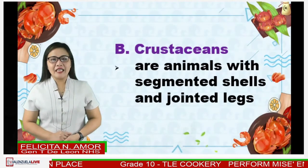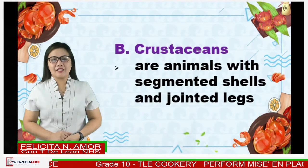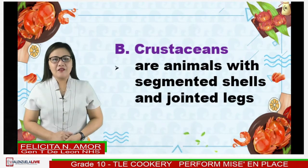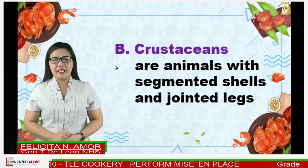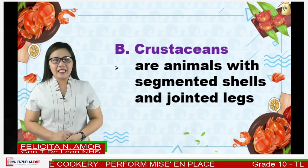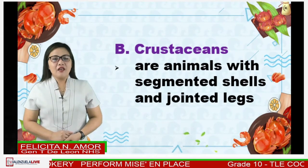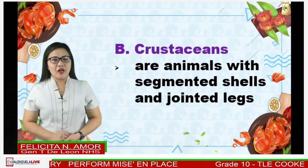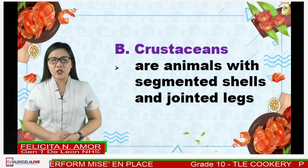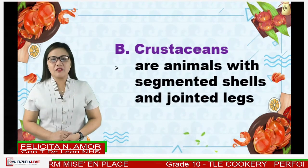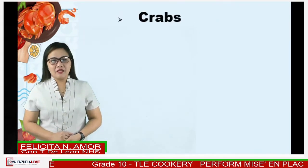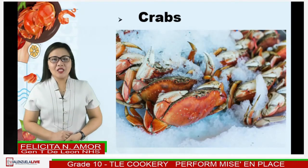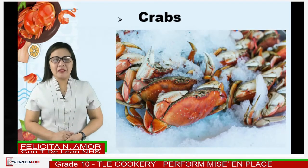The second category of shellfish is crustaceans. These are sea animals with segmented shells and jointed legs. They have shells that act as a shield. They turn coral red in color when cooked, which is much desirable for shellfish. Examples are shrimps, crabs, lobsters, and prawns.